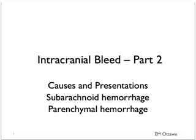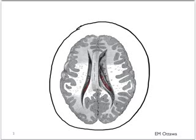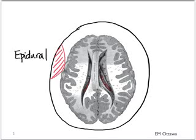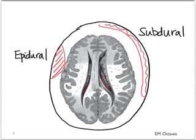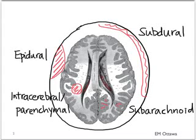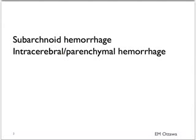Welcome back to intracranial bleed part 2. In this section, we will discuss subarachnoid hemorrhage and parenchymal hemorrhage, and their presentations. As we talked about before, there are four types of intracranial bleed: epidural, subdural, subarachnoid bleed, and intracerebral or parenchymal bleeds. We will discuss the presentation of subarachnoid hemorrhage and intracerebral or parenchymal hemorrhage.